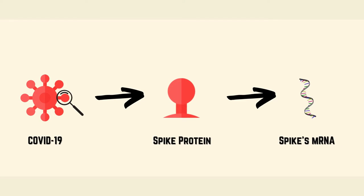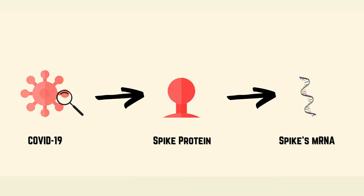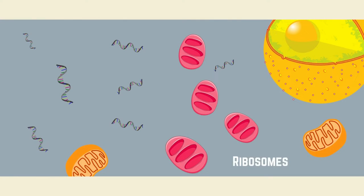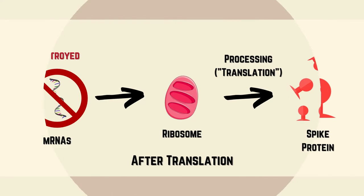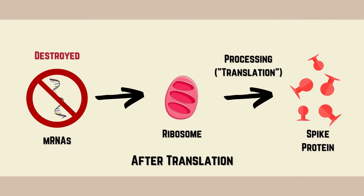When individuals take an mRNA vaccine, especially a COVID-19 vaccine, mRNA corresponding to the viral protein is introduced — usually a tiny piece of a protein found on the virus's outer membrane. Once inside the body, the mRNA travels to the ribosome. Based on the mRNA from the vaccine, the ribosome makes only a piece of the spike protein from the weakened, harmless virus. After making the pieces of the spike protein, the cell finishes making the protein and quickly breaks down the mRNA.